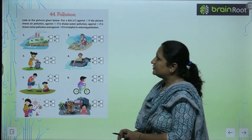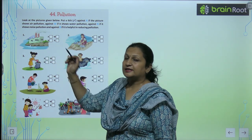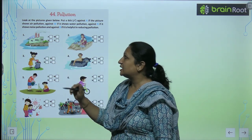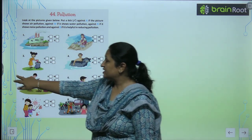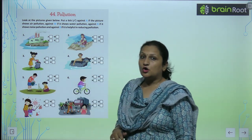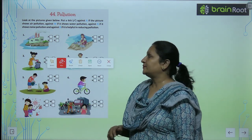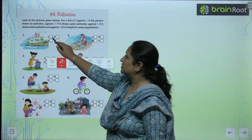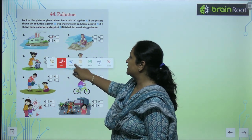See the first picture, children. What are we seeing here? We see that in industries there is smoke emitted. So this causes air pollution. So we will mark A for air pollution.